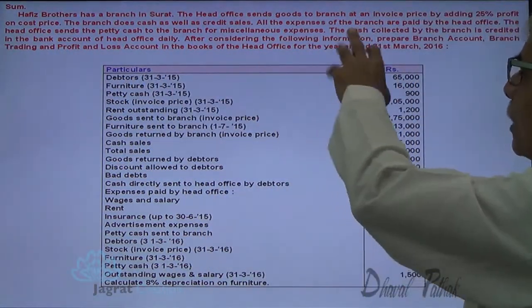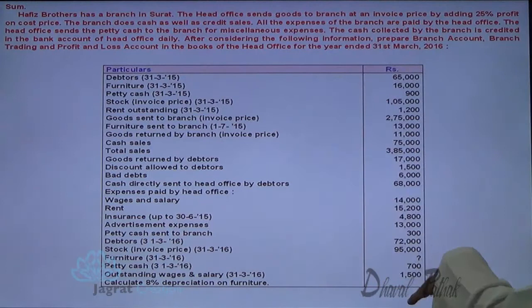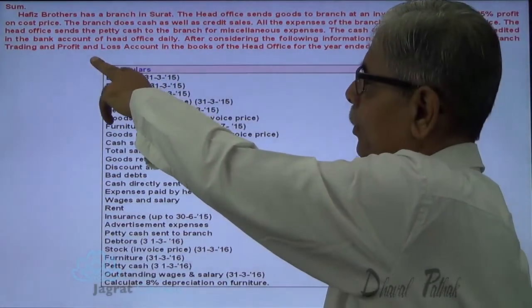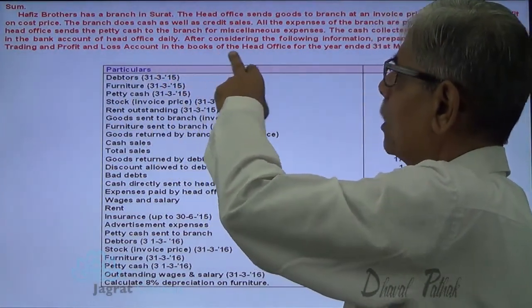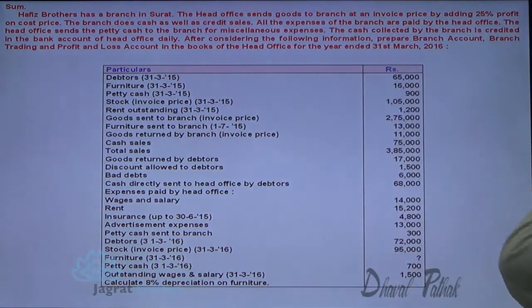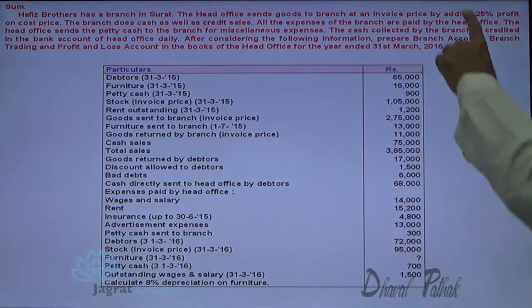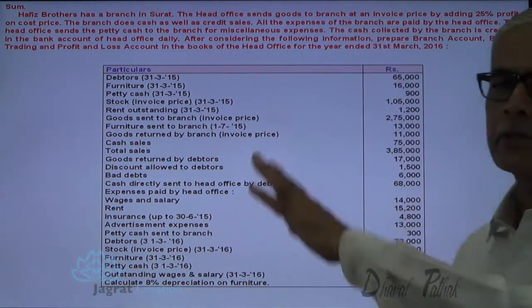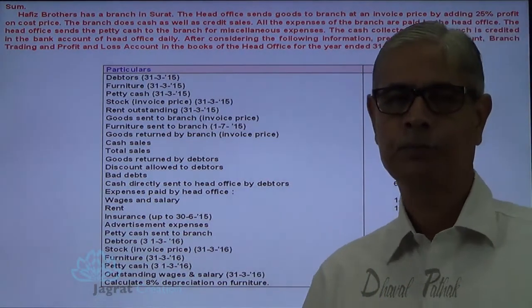After considering the given information, prepare the branch account, branch profit, and trading and profit and loss account in the books of the head office for the year ended 31st March 2006.